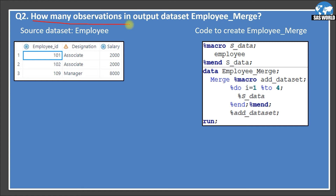Question number two: how many observations are in the output data set employee_merge? This time the data set is employee_merge, not employee_combined. The source data set is exactly the same — no change. The macro definition is exactly the same: macro s_data returns the employee text and %mend finishes the definition. Then in the data step, I'm creating the data set employee_merge, and instead of set, this time I'm using the merge statement.